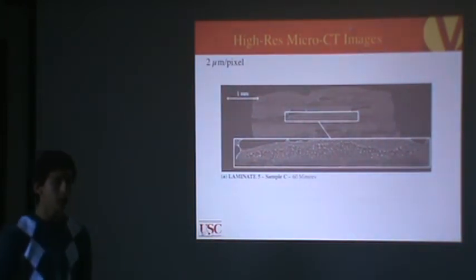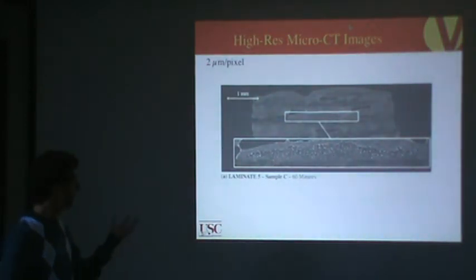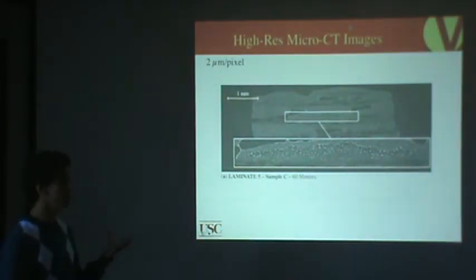They also ran a couple higher resolution images. This is laminate 5. Again, it experienced vacuum but no heat. This is a smaller sample size but it's much higher resolution, 2 microns per pixel. This allows you to see into the carbon fiber tows more clearly and with higher resolution.